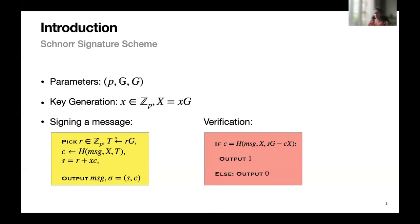In the two-round case, each party first sends some messages to generate the commitment, and then they send their partial signatures to obtain the S value of the Schnorr signature scheme. However, we must be very careful in the commitment generation process to prevent adversarial choice of randomness that depends on honest parties' randomness.